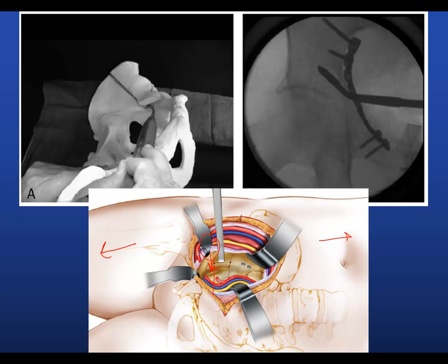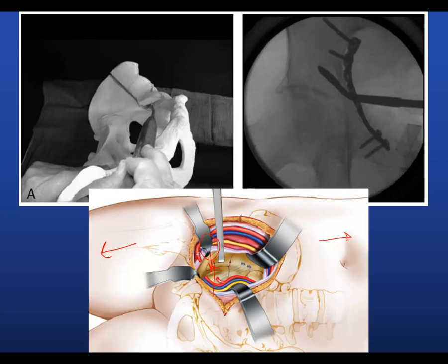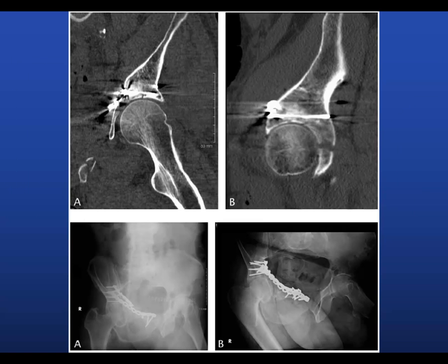Here's the exposure: the obturator vessels, external iliac vessels up here, pelvic brim. There's that dome impaction right in here that you're trying to deal with — so how do you get it down? Standing on the opposite side of the fracture, you get in with this angled instrument and try to push it down, then bone graft underneath it. You can put bone graft and then a rafting screw above it — like you would for a tibial plateau fracture — to try and hold that fragment down. This is a nice technical trick to deal with dome comminution; you need a sizable piece that you can actually push down.